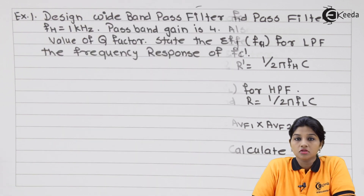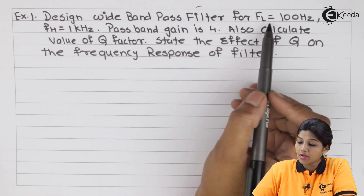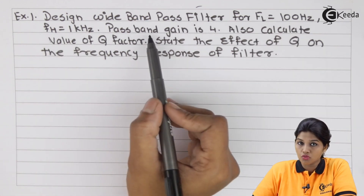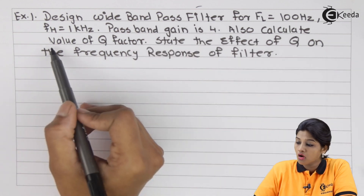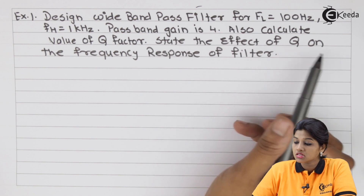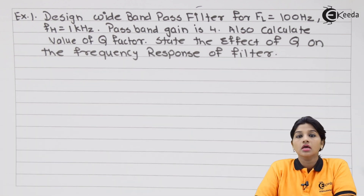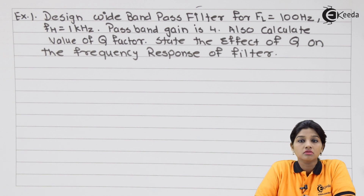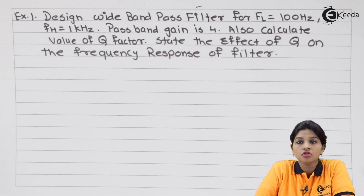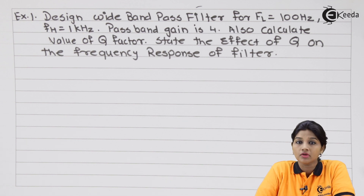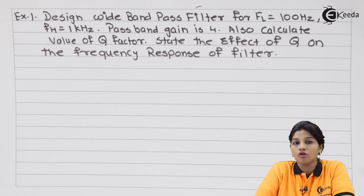Now let's understand the designing process in detail by considering examples. Problem 1: Design a wide band pass filter for fl equals 100 Hz and fh equals 1 kHz, pass band gain is 4. Also calculate the value of Q factor and state the effect of Q on the frequency response. Here the pass band gain is given as 4, so we use that value rather than assuming 2.